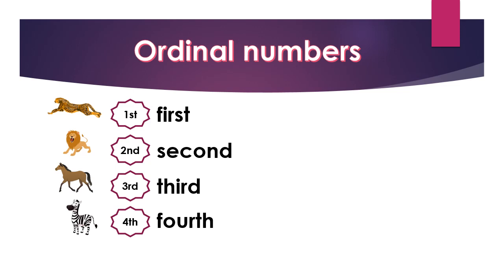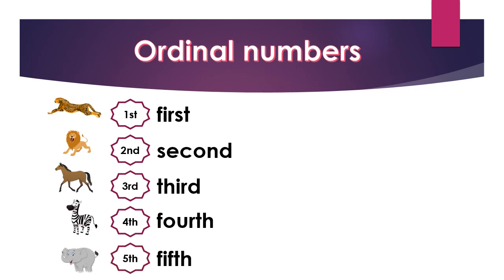The zebra is at the fourth position. F, O, U, R, T, H — fourth. The elephant came fifth in the running race.